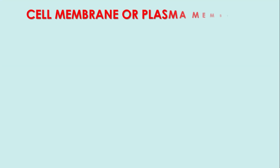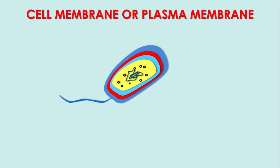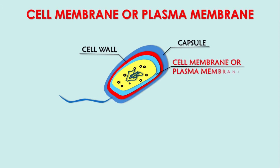In today's lecture, we are going to study about the cell membrane or the plasma membrane of the bacteria. The bacterial cell has the capsule on the outermost side, below which is the cell wall, and the cell membrane or plasma membrane is beneath the cell wall. Together, the cell membrane and cell wall comprise the cell envelope.